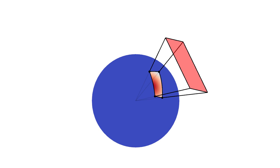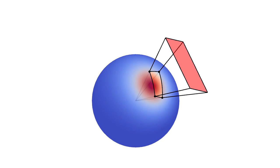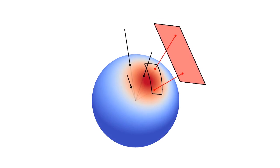Our key contribution to the problem of polygon light shading is the observation that this spherical integral is invariant to linear transformations. We extract this property by interpreting the spherical integral as a fraction of directions that originate from the distribution and intersect the polygon. Those intersecting directions are shown in red in the figure, and remain so after being affected by linear transformations.